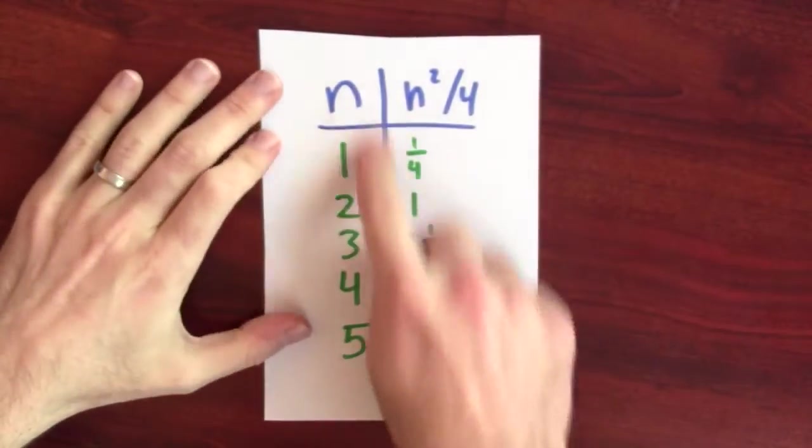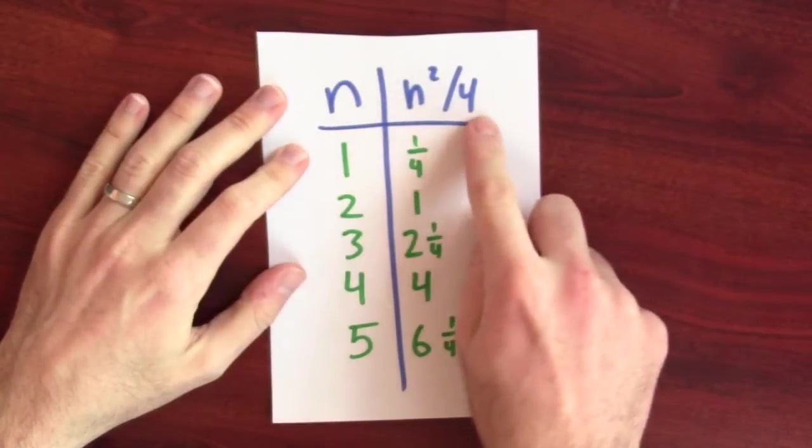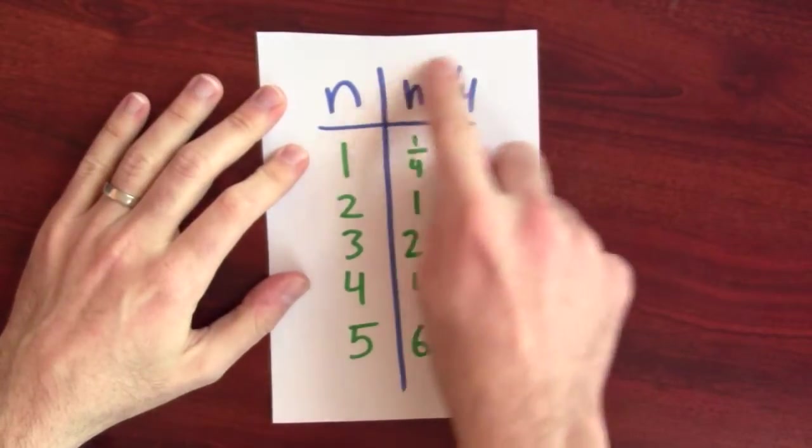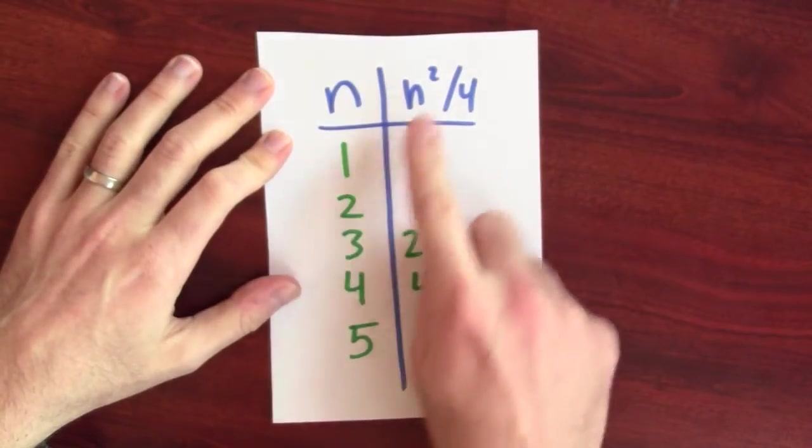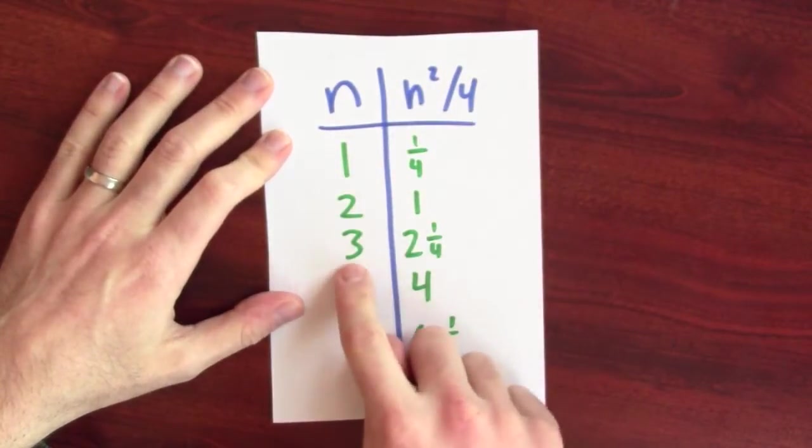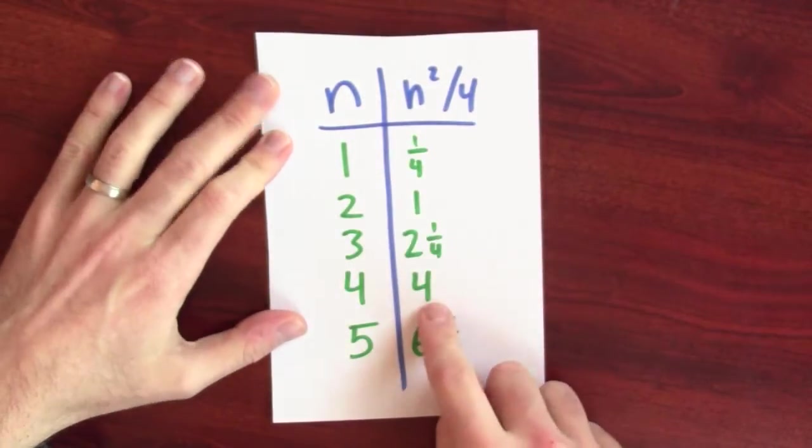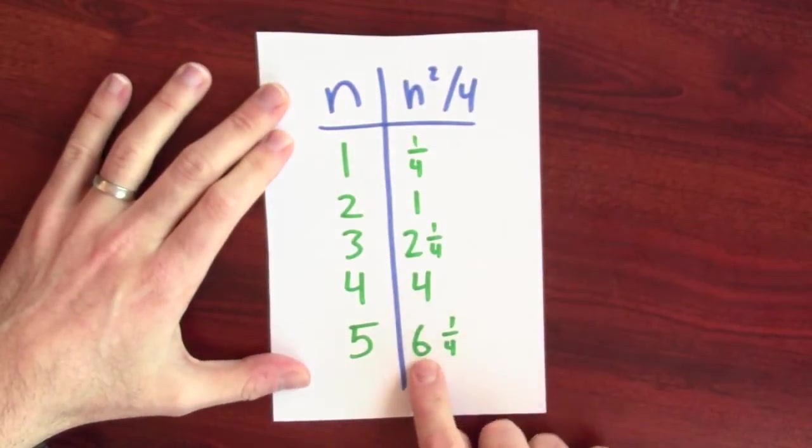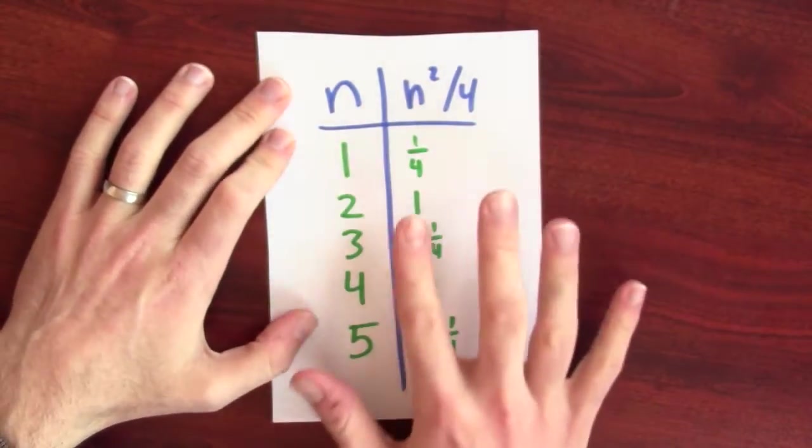So here's the trick. I'm going to use this table of quarter squares. This is n squared over 4, a quarter square. So here's n, here's the output. If I plug in 1, I get a quarter. If I plug in 2, 2 squared over 4 is 1. 3 squared over 4 is 2 and a quarter. 4 squared over 4 is 4. 5 squared over 4 is 6 and a quarter. You can imagine I've got a really big table of these quarter squares.